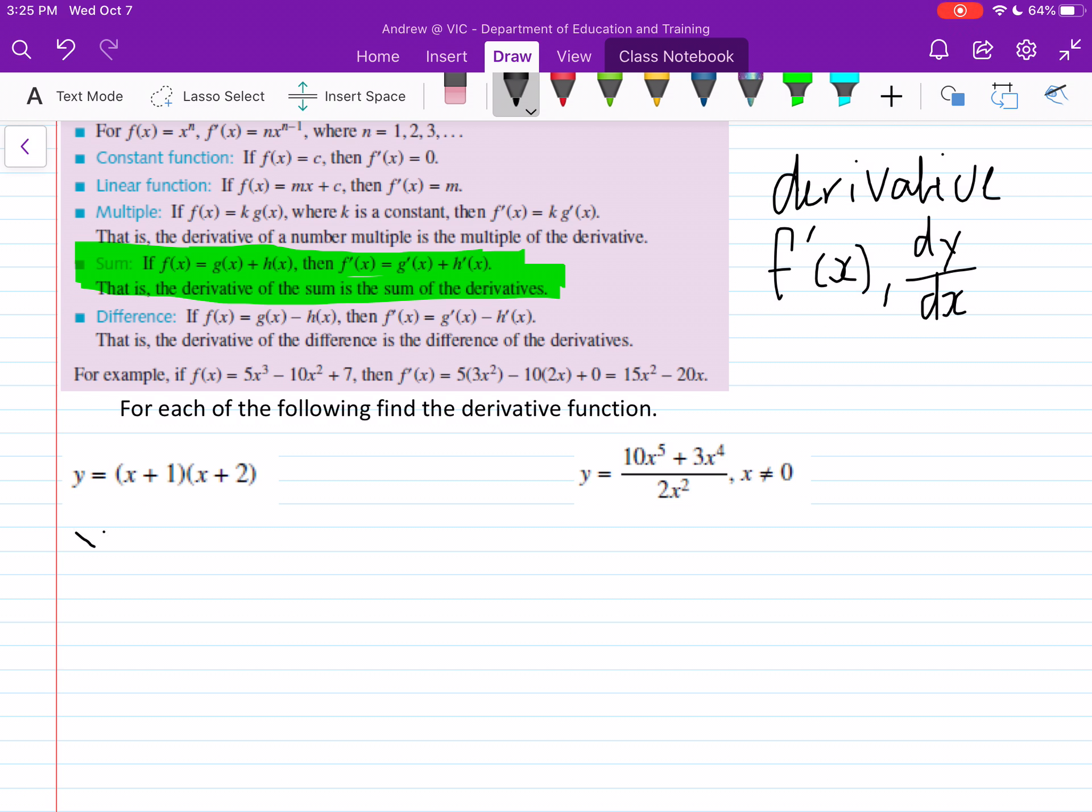So we've got y equals - we expand out the brackets to make it x squared, and then plus 3x plus 2 times 1 which is 2. So that's what it is expanded out.